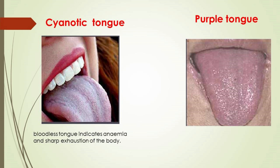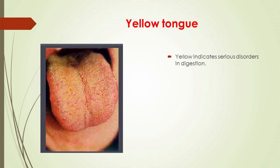A cyanotic tongue indicates anemia and sharp exhaustion of the body. A purple tongue indicates blood stagnation. A tongue with dark spots also indicates blood congestion and signals disturbed circulatory and respiratory systems. A yellow tongue indicates serious disorders in digestion — it is ordinarily a harmless condition causing a thick yellowish coating, which tends to occur when dead skin cells, bacteria, or discoloring particles become trapped on the tongue surface.